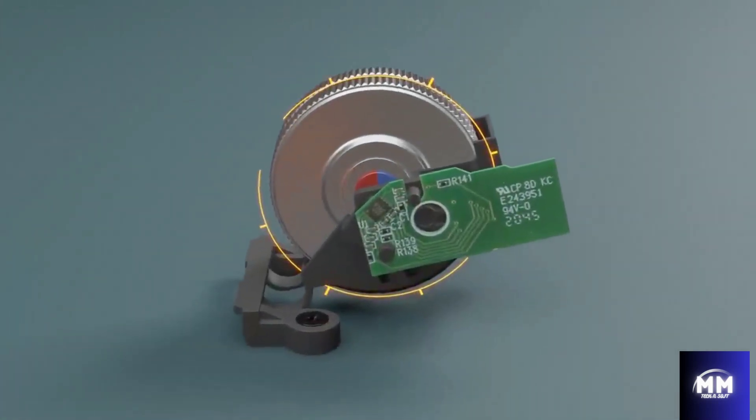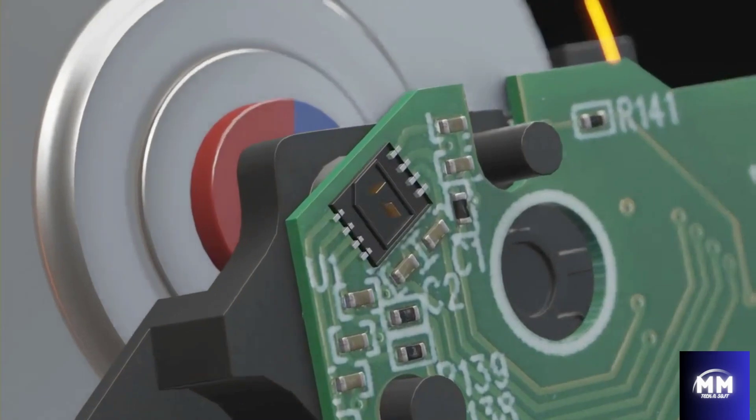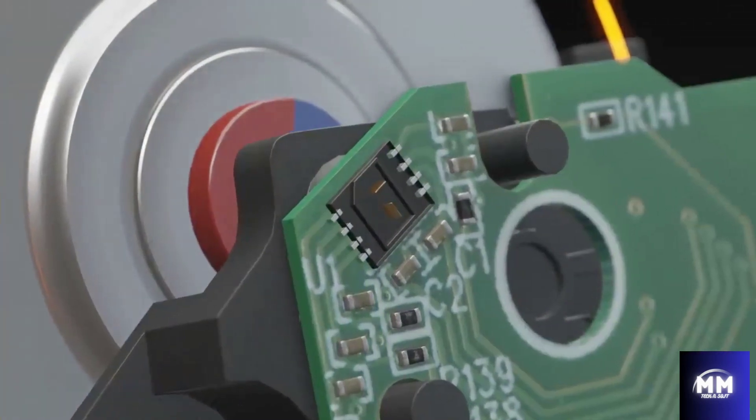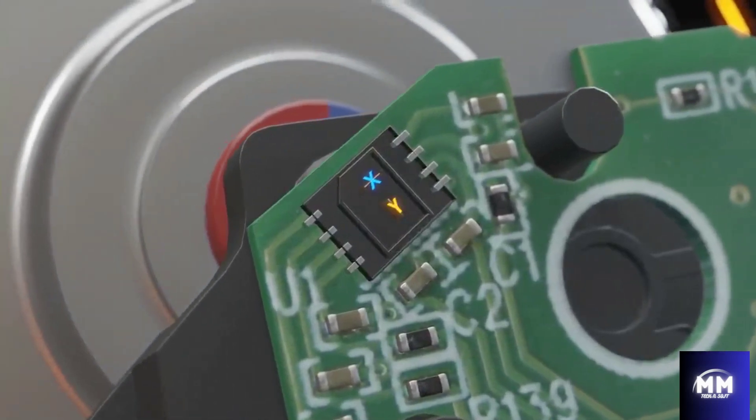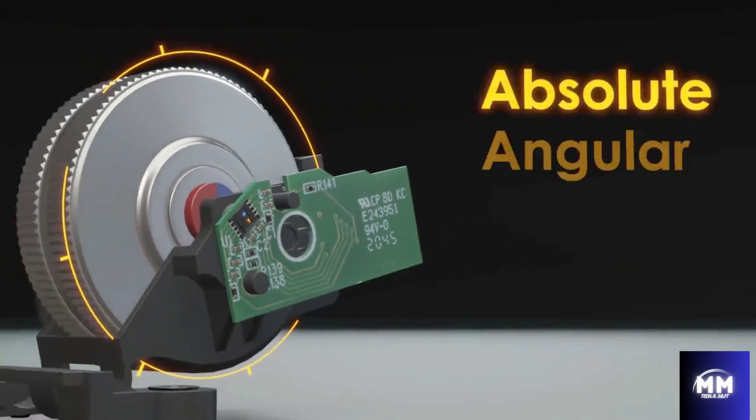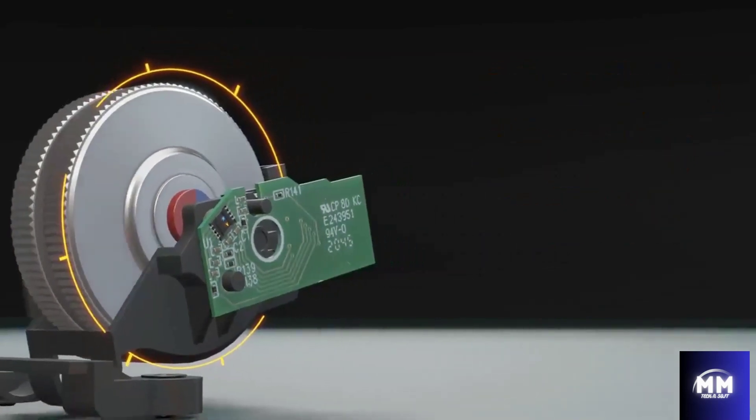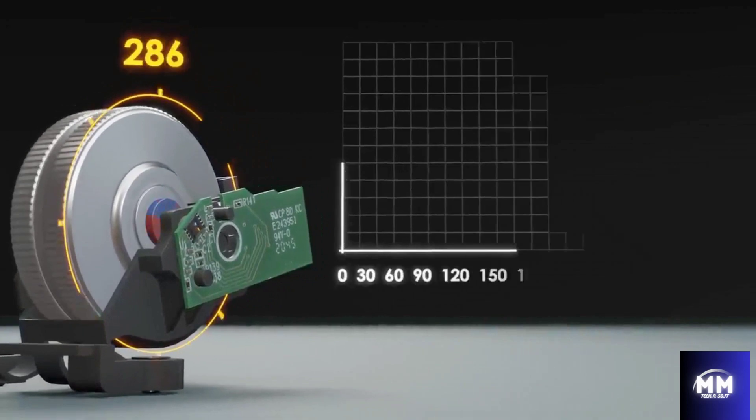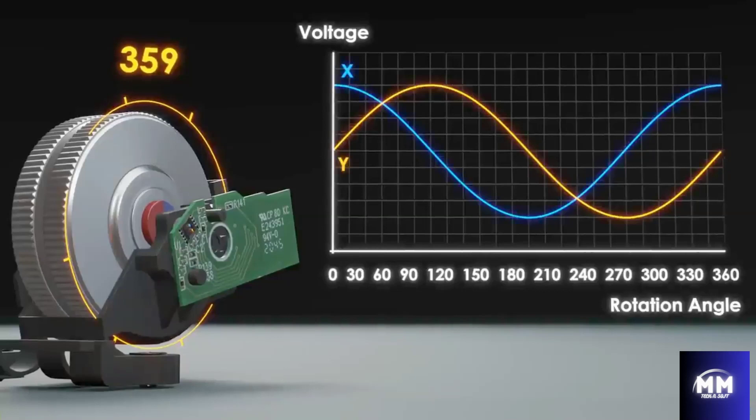However, a single Hall effect sensor can't tell us the direction of rotation, and therefore, in this microchip, we have two Hall effect sensors positioned perpendicular to one another and labeled X and Y. With two sensors, we're able to determine the absolute angular position of the scroll wheel because for every different angle from 0 to 359 degrees, there's a unique combination of voltages on the X and Y magnetic sensors.